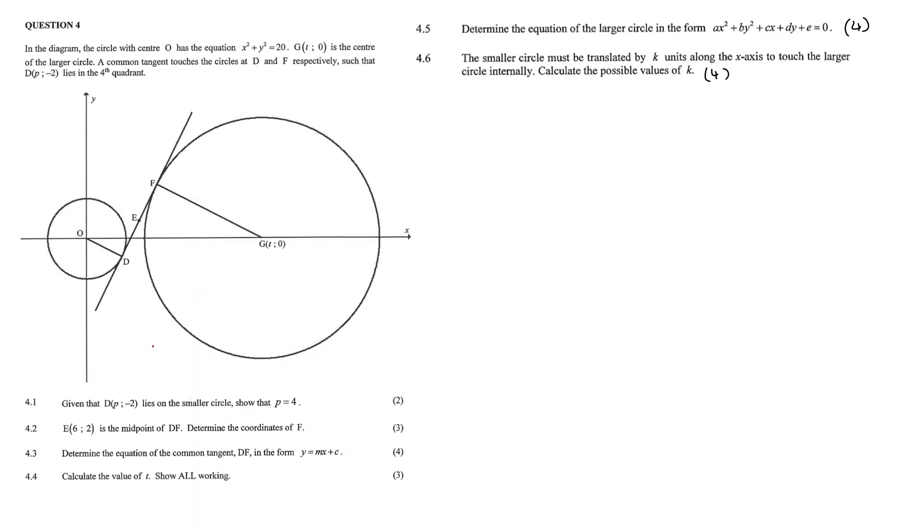Question 4.1: Given that D with coordinates p and negative 2 lies on the smaller circle, show that p is equal to 4. So we can use our equation to do this. As we know, x squared plus y squared is equal to 20.